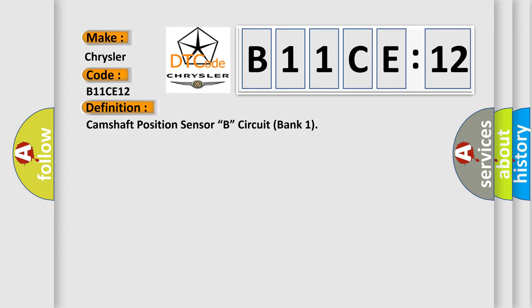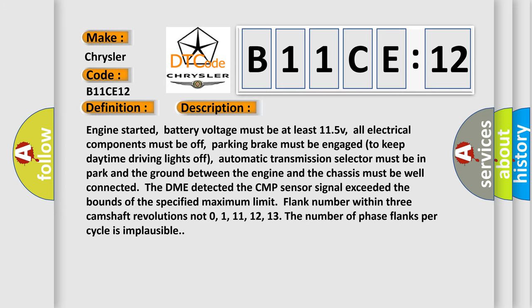Now this is a short description of this DTC code. Engine started, battery voltage must be at least 11.5V, all electrical components must be off, parking brake must be engaged to keep daytime driving lights off, automatic transmission selector must be in park, and the ground between the engine and chassis must be well connected.